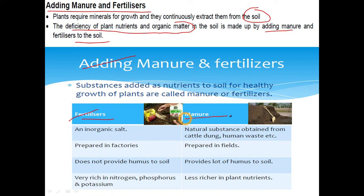What about manure? Manure is a natural substance prepared or obtained by the decomposition — or degradation — of animal waste, human waste, and cattle dung. It is generally prepared in the fields and provides a lot of humus to the soil, but the plant nutrients are less rich in comparison to fertilizers. It increases the water holding capacity of the soil, which improves the soil texture. This is the basic difference between manure and fertilizers.